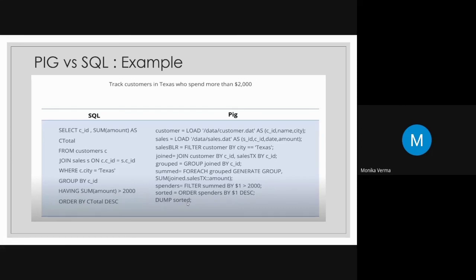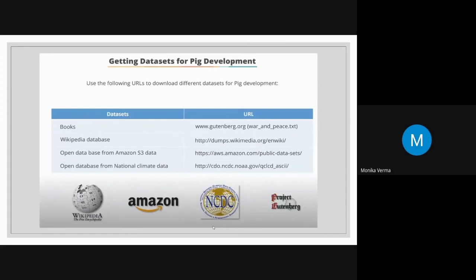Although Pig has a rich set of operators, you have a limited set compared to SQL. In SQL you can optimize your query using different techniques, but in Pig you cannot do such optimization as a user. This is the difference between Pig and SQL. If you want to practice, there are different datasets you can download and work on for Pig development.